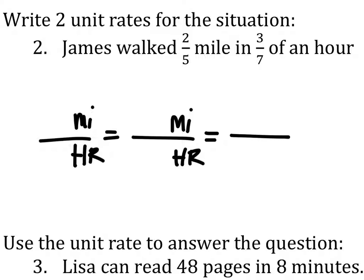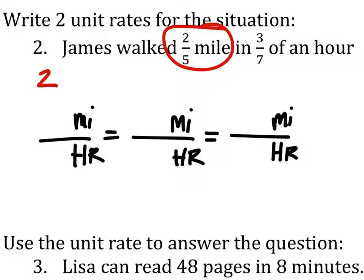We will make a third fraction for this. This first fraction we have — we know that it's two-fifths miles for three-sevenths of an hour. So there's our first fraction.